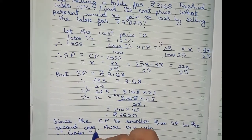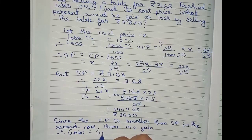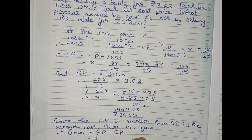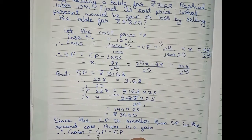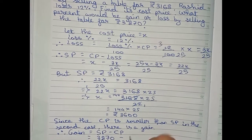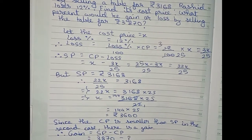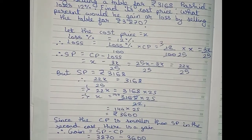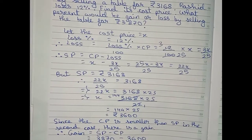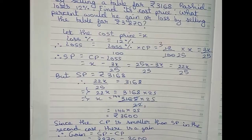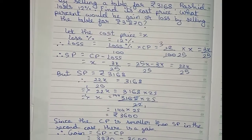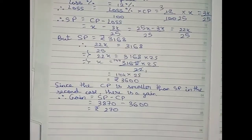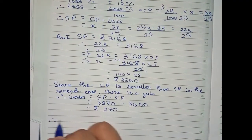The gain amount is calculated using the formula: SP minus CP. SP is 3870 and CP is 3600, so gain equals rupees 270. This is our gain.